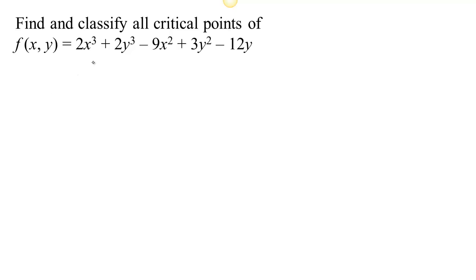Let's look at finding critical points of this function and classifying them as either min, max, or saddle. Remember, to find critical points we're looking for places where the directional derivative in all directions is 0. That would mean the gradient is 0, which tells us that in first order there's no direction we could go to either increase or decrease the value — so we're either at a max, a min, or possibly a level spot like a saddle.